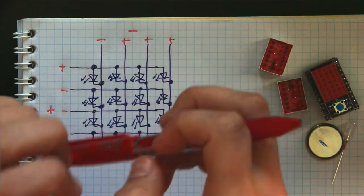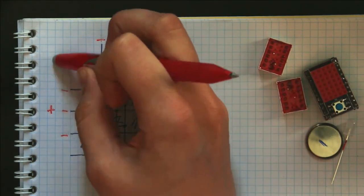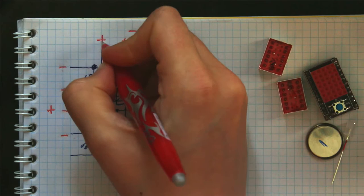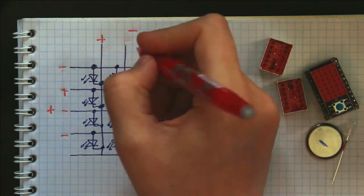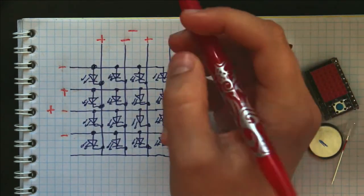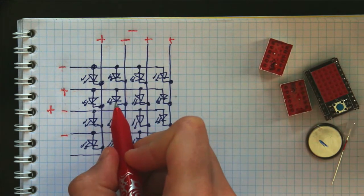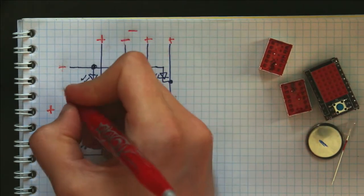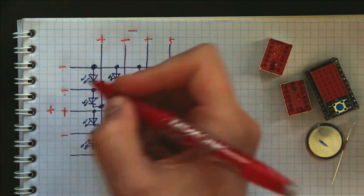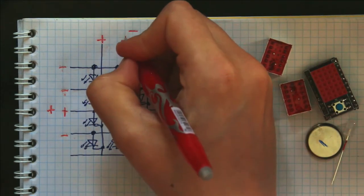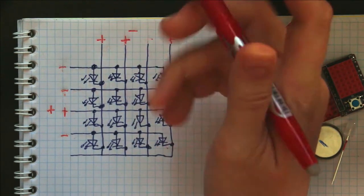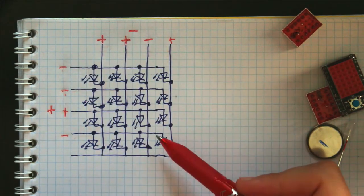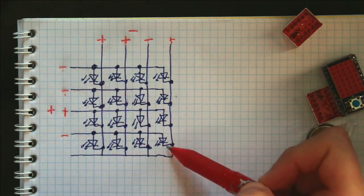Then we would set this to negative, this to positive, this to positive, this to negative, and then only this LED would be illuminated. And we would continue on setting this to negative, this to positive, this to positive, this to negative, to illuminate this, and so on, until the entire diagonal had been illuminated with one flashing light each time.